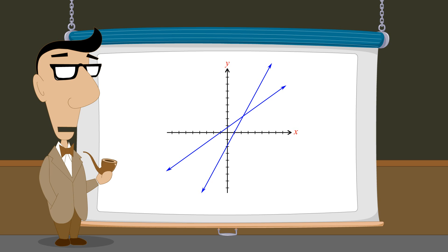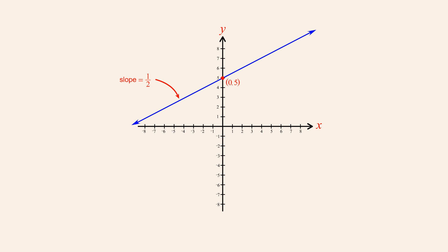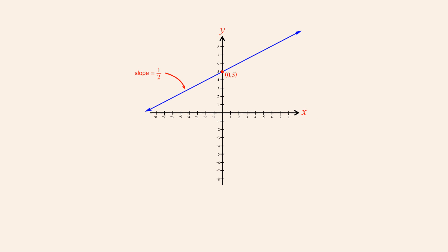One possibility is that the lines described by two linear equations can be parallel. As we have seen, any non-vertical line in the Cartesian plane can be uniquely identified by specifying its slope and a point which lies on the line. If the point falls on the y-axis, the equation of the line can be written in slope-intercept form. In this form, the constant m is the slope of the line and the constant b is the y-coordinate of the y-intercept.